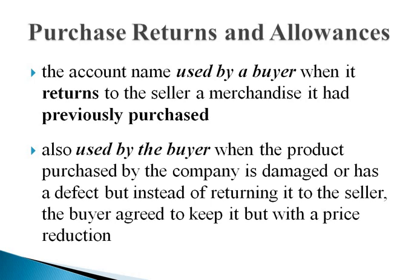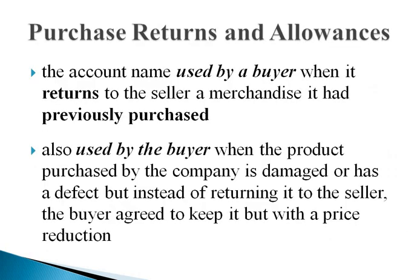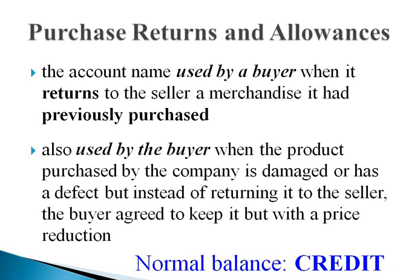Purchase returns and allowances is the account title used by a buyer when it returns to the seller merchandise inventory it had previously purchased, or when the buyer is granted a price reduction by the seller because the goods delivered have damage. This account is shown in the income statement as a deduction from purchases. Since the normal balance of purchases is debit, the normal balance of purchase returns and allowances is credit.